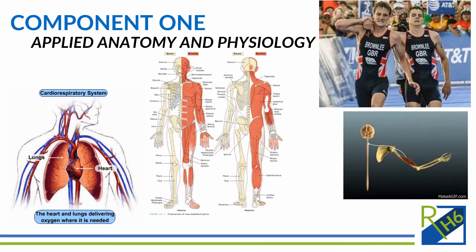One of the topics that we study is applied anatomy and physiology. Here we'll be looking at the musculoskeletal system, cardiorespiratory system, our neuromuscular system and also our energy systems. For each of these it's a case of looking at the structures, the physiology, the processes that take place, and then the adaptations that happen to these systems as a result of training and the impact that has on our sporting performance.